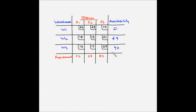The first step in solving the transportation model is to formulate the transportation table, expressing supply from origins, requirements at destinations, and cost of shipping from origin to destination in the form of a matrix. For this example, we have already been given the transportation table. A check needs to be done to find out if total supply and demand are equal. If yes, the problem is balanced; if not, a dummy origin or destination is added.